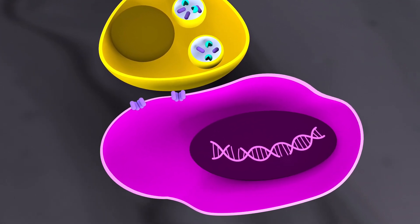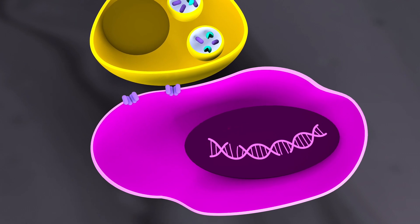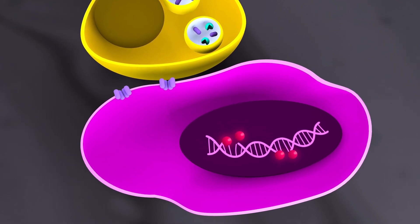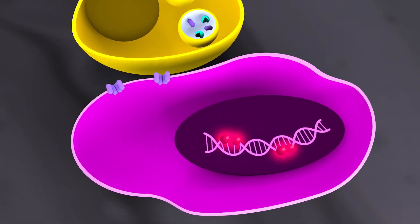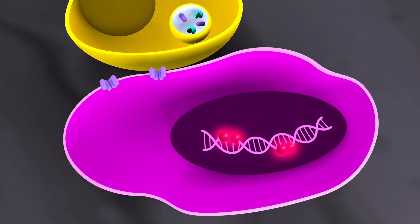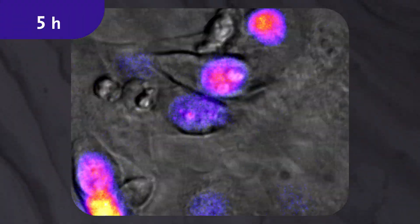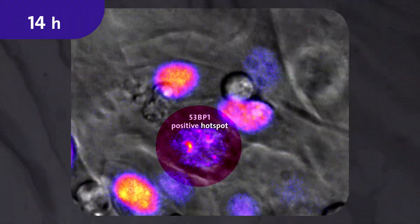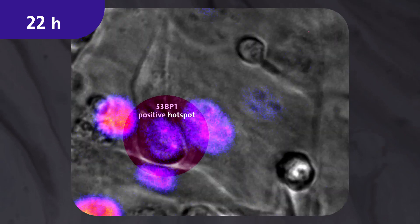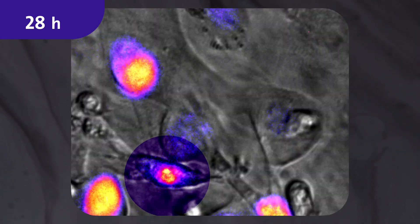The tumor cell counters by attempting to repair the damaged DNA. The DNA repair protein 53BP1 is involved in this. DNA repair zones are then visible as characteristic hotspots. If the damage is great enough, this leads to cell death due to complete fragmentation of the DNA and nucleus, also known as apoptosis.